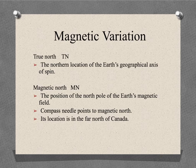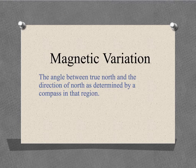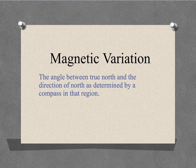Consequently, depending on its position on the Earth's surface, the compass needle from a ship taking a bearing will not usually point to true north, but rather point to magnetic north. Magnetic variation is the angle between true north and the direction of north as determined by a compass in a particular region, and is given a direction of either east or west.